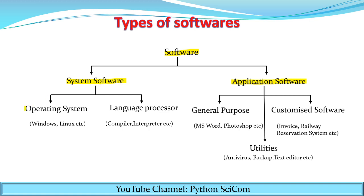System software is further divided into operating system and language processor. The operating system is the software that operates the computer system. The computer does not understand human language, so it has to be converted into binary code — that is done by the software called the language processor. Examples of operating systems are Windows and Linux. Examples of language processors are compiler and interpreter.